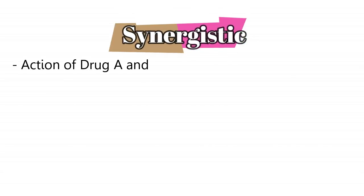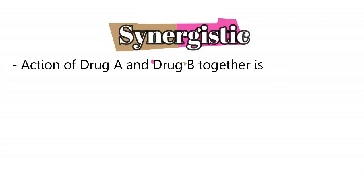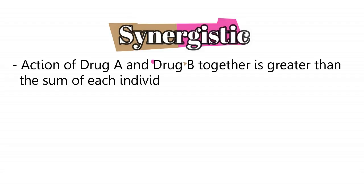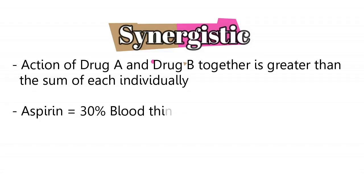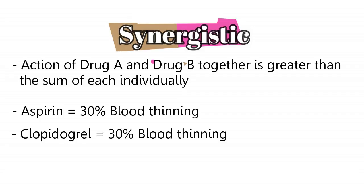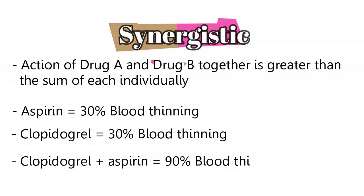Next we have synergistic effects. This basically means that the action of drug A and drug B together is greater than the sum of them apart. For example, aspirin can cause 30% blood thinning and clopidogrel can cause 30% blood thinning, but together they cause 90% blood thinning instead of 60%.